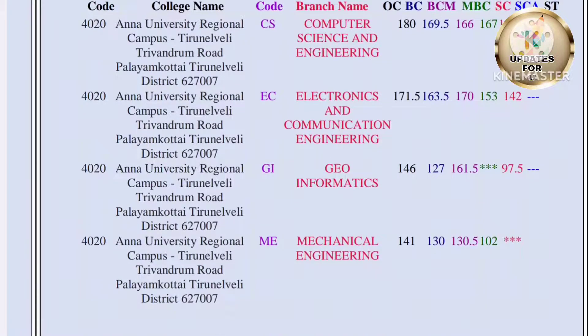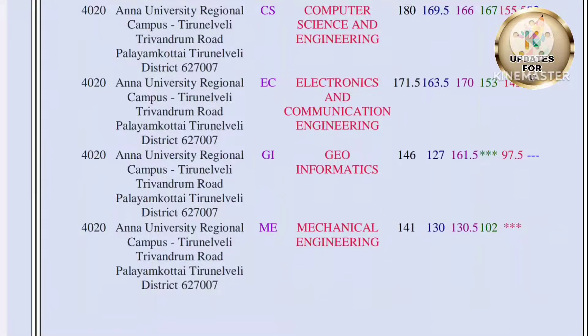Next, Geo Informatics. OC: 146, BC: 127, BCM: 161.5, SE: 92.5. Next, Mechanical Engineering. OC: 141, BC: 130, BCM: 130.5, MBC: 102. This is the average cutoff.